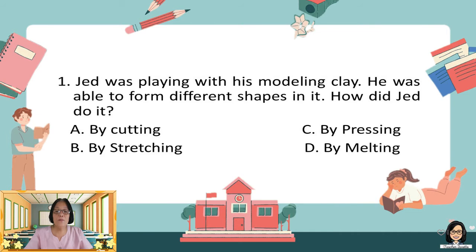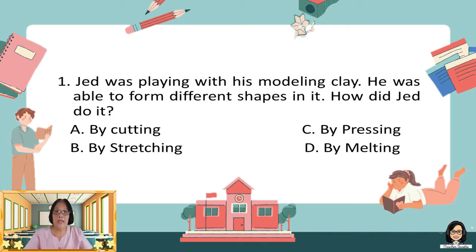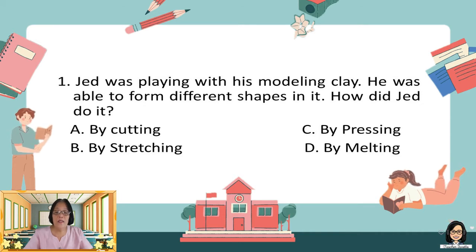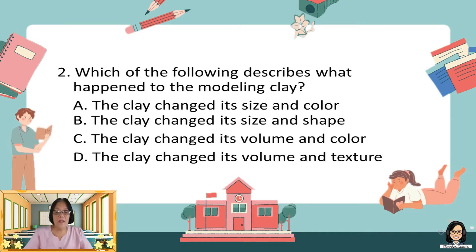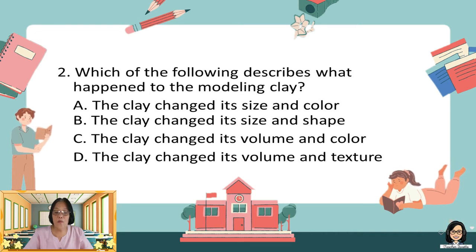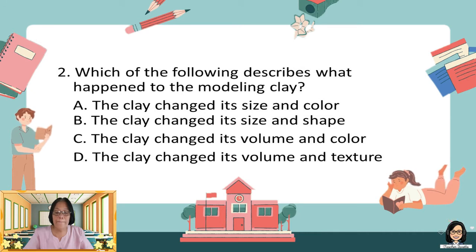Number one: Jed was playing with his modeling clay. He was able to form different shapes with it. How did Jed do it? A. By cutting. B. By stretching. C. By pressing. D. By melting. Number two: Which of the following describes what happened to the modeling clay? A. The clay changes its size and color. B. The clay changes its size and shape. C. The clay changes its volume and color. D. The clay changes its volume and texture.